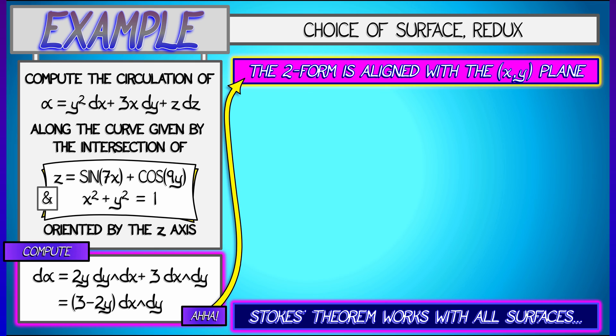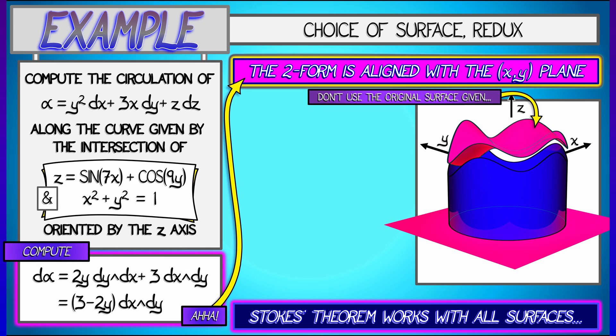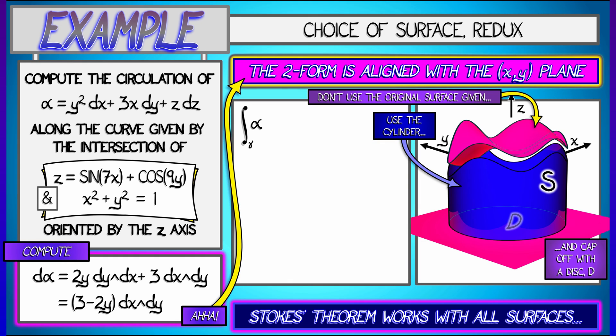It is measuring projected area into the xy plane. So instead of using that wavy surface that bounds the curve, what I'm going to do is build a custom surface s that is given by using the cylinder for the sides, and I'm just going to follow that cylinder down for a while and then cap it off with a disk that is parallel to the xy plane, but below it by whatever distance I need to go.